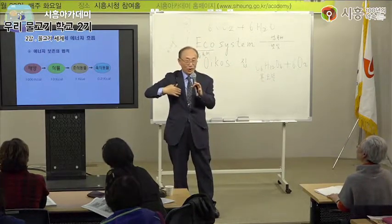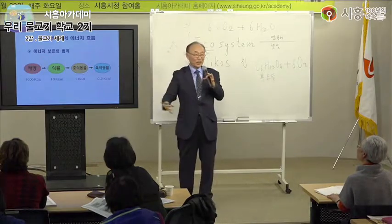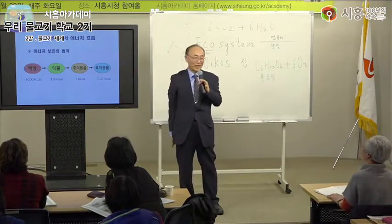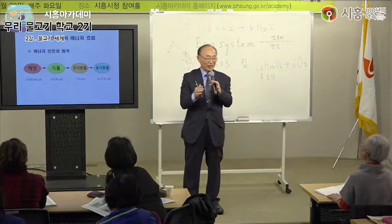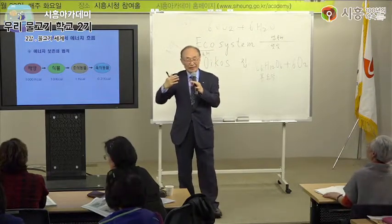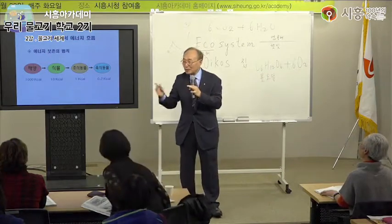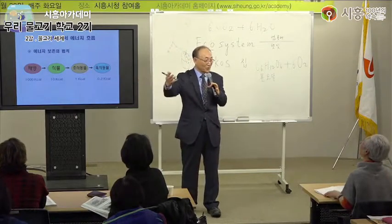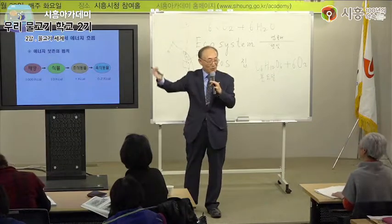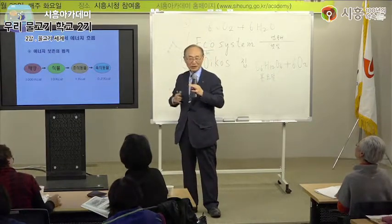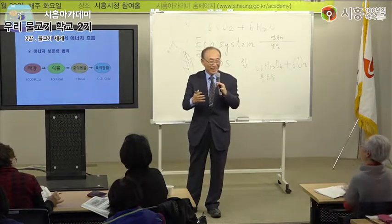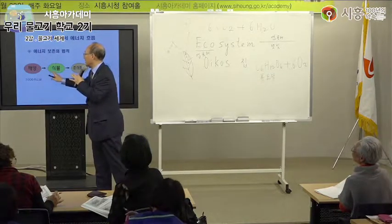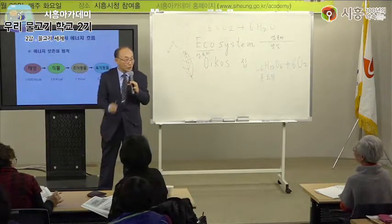에너지가 바로 들어오고 있고, 또 식물이 산소를 내주고 있습니다. 이걸 아는 사람은 식물을 보고 지나가도 행복하죠. '여기서 이들이 산소를 내줘서 내가 숨을 쉰다' 하고 고맙다는 말이 절로 나옵니다. 이와 같이 에너지는 식물로 들어가는데 거꾸로 식물에 있는 에너지는 태양으로 갈 수가 없습니다. 한쪽으로만 흘러갑니다.